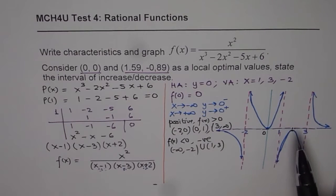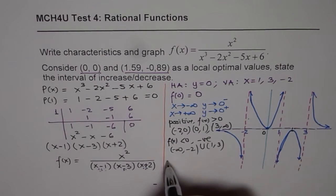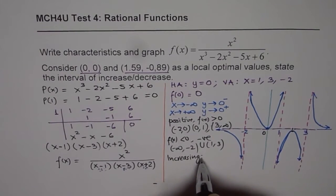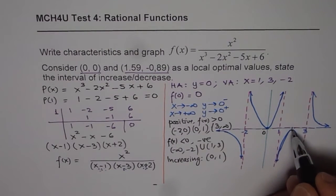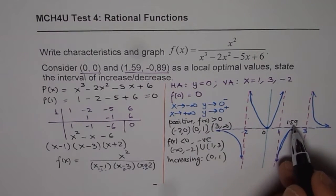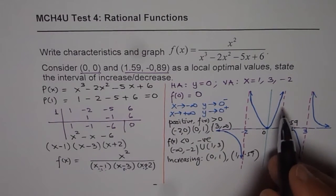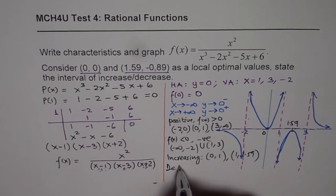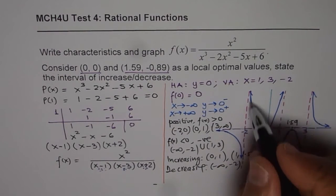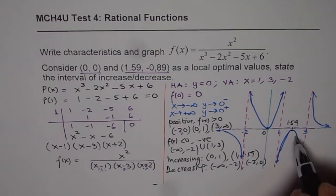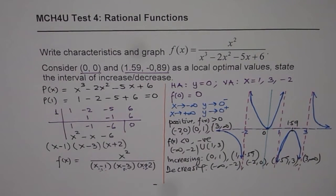For increasing and decreasing intervals: the function is increasing from 0 to 1, and from 1 to 1.59 — that is why the local maximum point at 1.59 is provided. The function is decreasing on all other intervals within its domain: from minus infinity to minus 2, from minus 2 to 0, from 1.59 to 3, and from 3 to infinity.